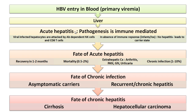Acute hepatitis outcomes: the person may recover in 1–2 months; in 0.5–2% of cases there is mortality; some develop extra-hepatic complications like arthritis, polyarteritis nodosa, glomerulonephritis, and urticaria; and some — 1–2% — develop chronic infection. From chronic infection, patients may be asymptomatic carriers or develop recurrent or chronic hepatitis, which can ultimately culminate into either cirrhosis or hepatocellular carcinoma.